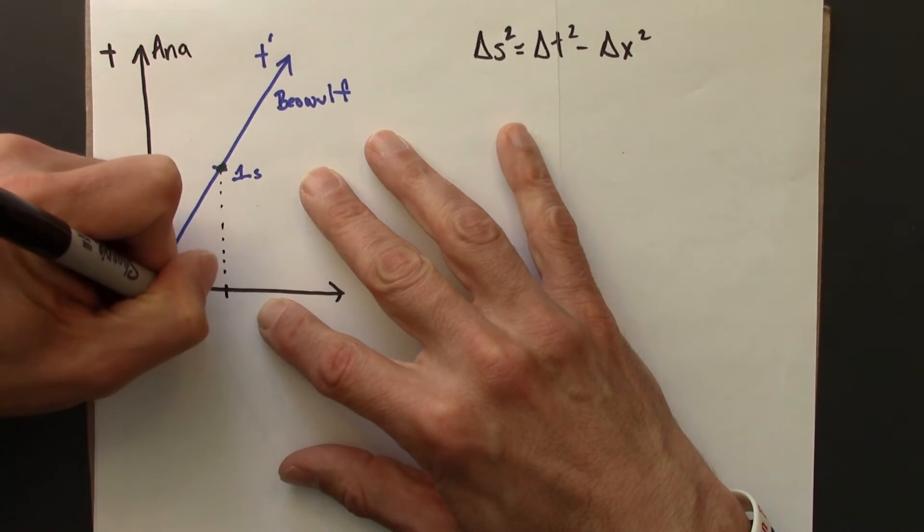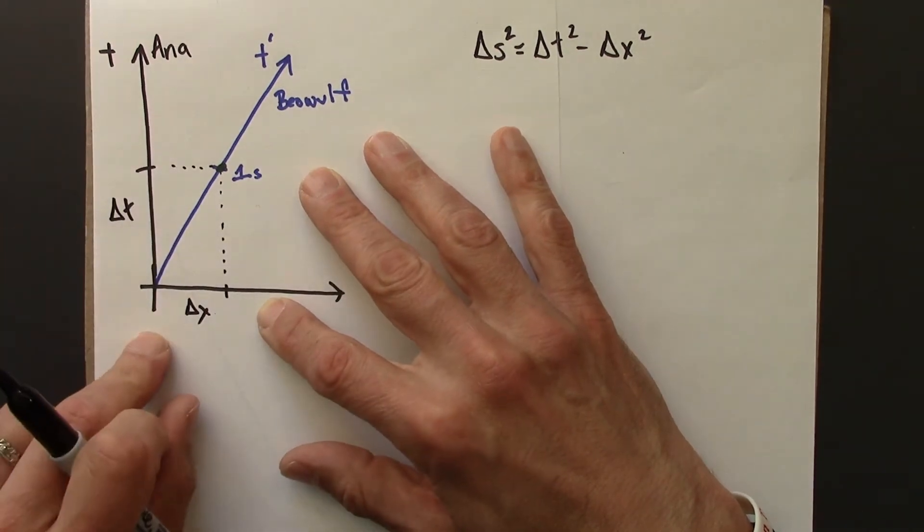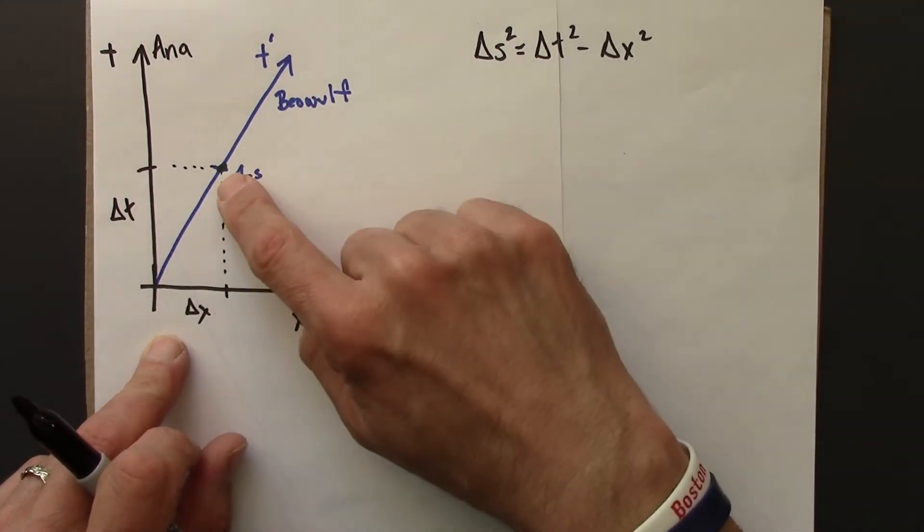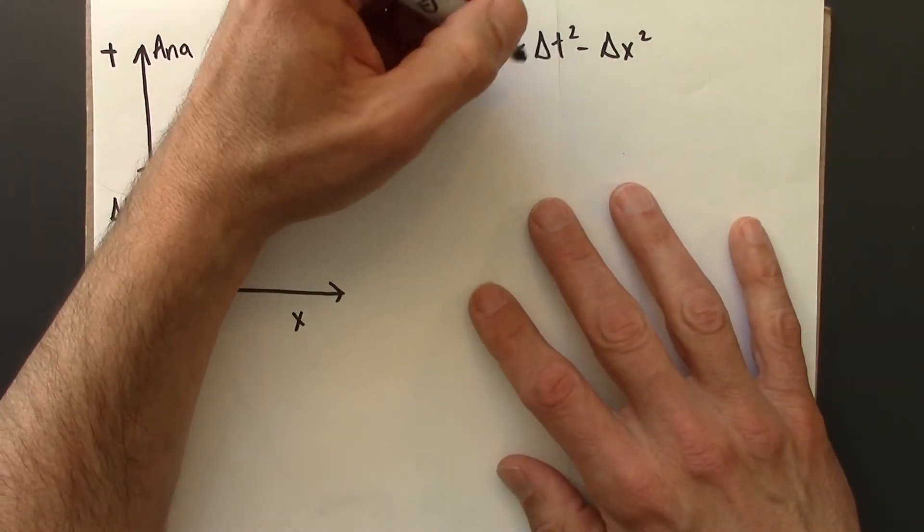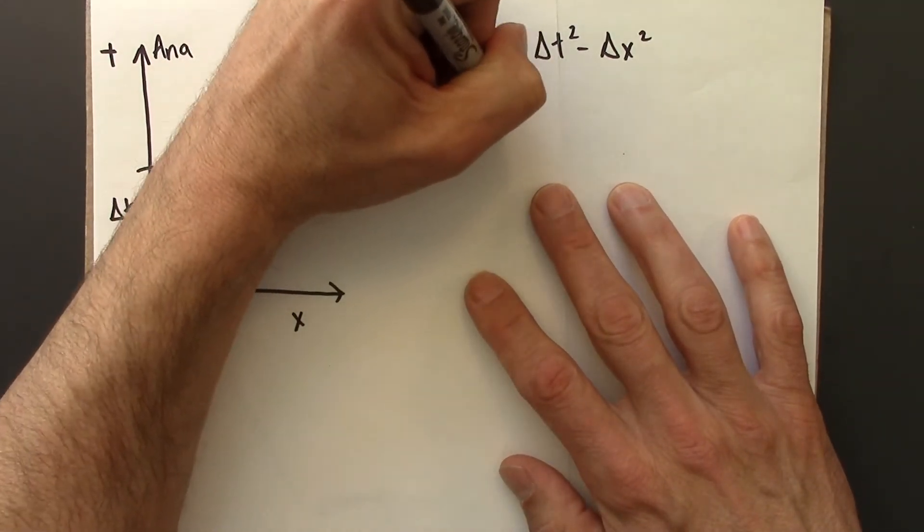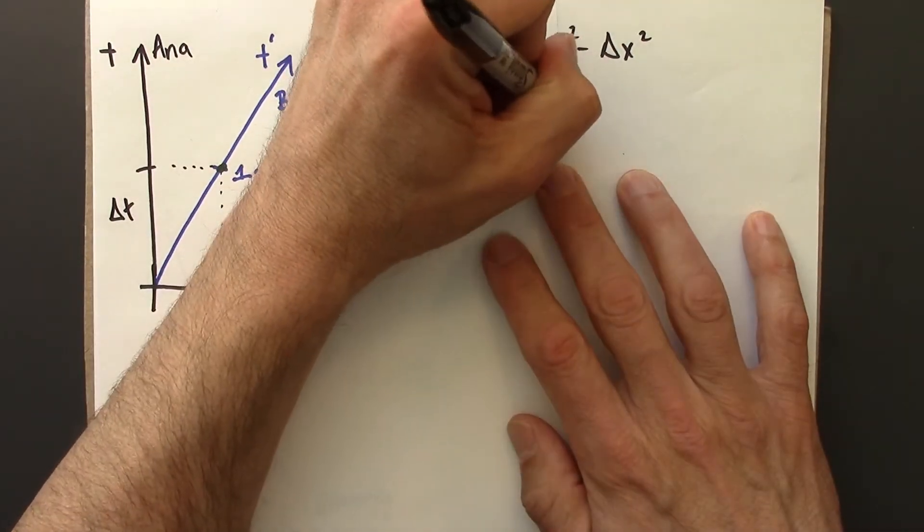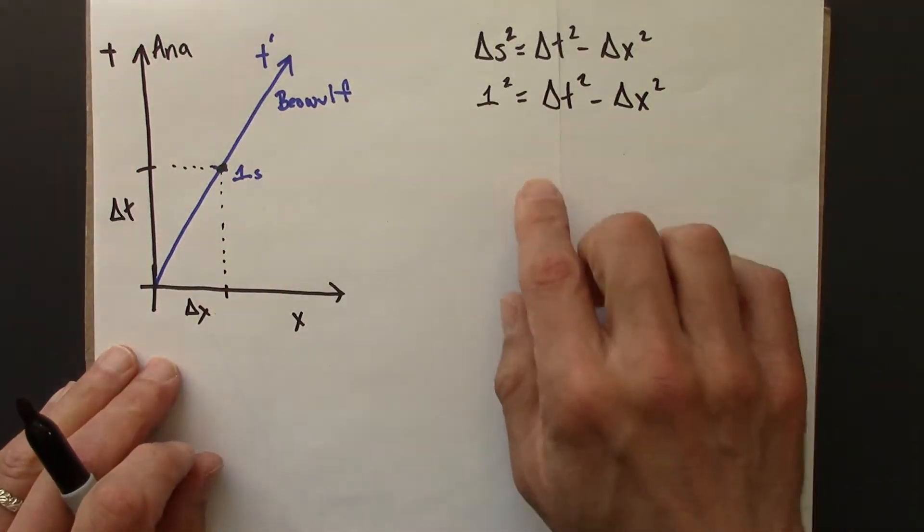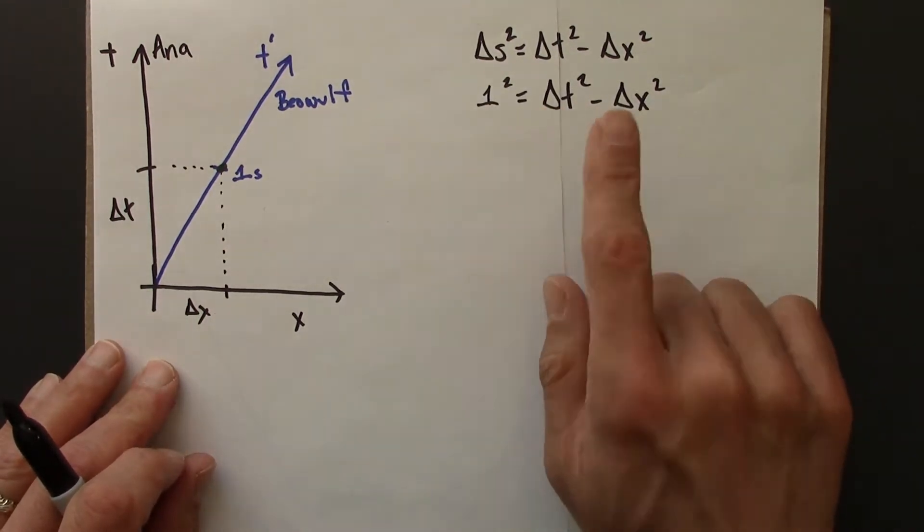So this distance is going to be a delta x, and then this here is a delta t. So I know that Anna, she'll have a delta x, a delta t, she would calculate the same spacetime interval. So let's see. I guess I'll just plug in 1 there for the time being. Alright, so I'm interested in delta t, but there are two unknowns here, delta t and delta x.